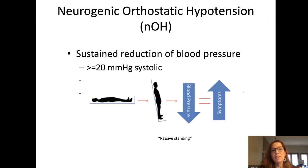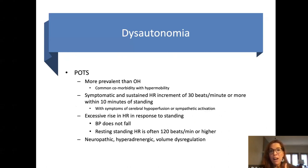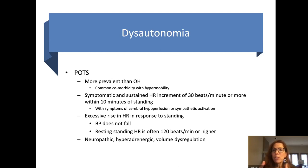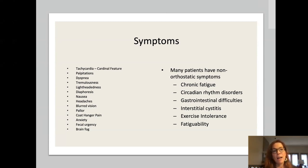Orthostatic hypotension is basically a sustained reduction of blood pressure, whereas postural orthostatic tachycardia syndrome doesn't usually involve blood pressure as much — it's usually about an increase in heart rate with head-up tilt or when standing. What's important is that these changes in heart rate and/or blood pressure come with symptoms. There are different subtypes of POTS — neuropathic, hyperadrenergic, and volume dysregulation — and the key question is whether the elevation in heart rate or decrease in blood pressure is symptomatic.